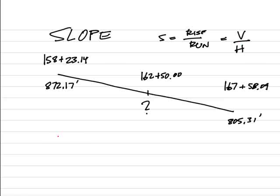First of all, H for the total slope is going to be the difference in the two stations. So it'll simply be 16758.09 minus 15823.14.